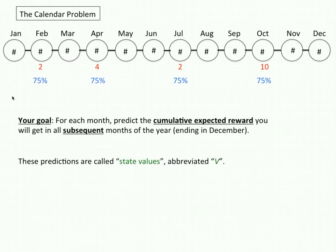You're not told the values in red and blue at the start of the problem. At each point in time what you know is the state that you're in, that is what month you're in, whether you got a reward in that state and how big it is. Anything else you know is learned through experience. Your goal in the calendar problem is for each month predict the cumulative expected reward that you will get in all subsequent months of the year ending in December. So what is expected reward? It is the product of the reward amount times the probability with which it will be received. So for example the expected reward here is 1.5.